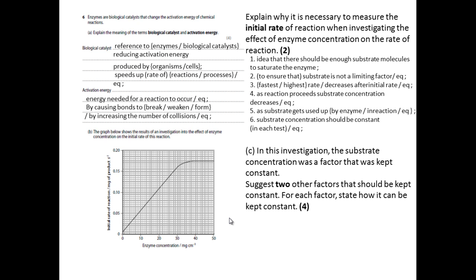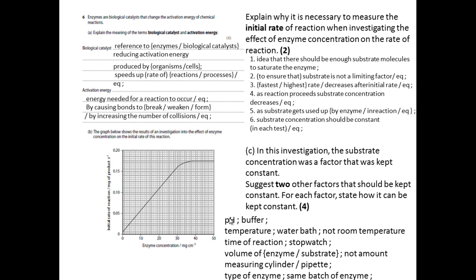You basically have to name two of the things that need to be kept the same. These are your control variables and then you need to give an explanation of how they can be kept the same. So pH and you use a buffer solution in order to do that. Because we know pH, a high or low pH can actually denature the enzyme.